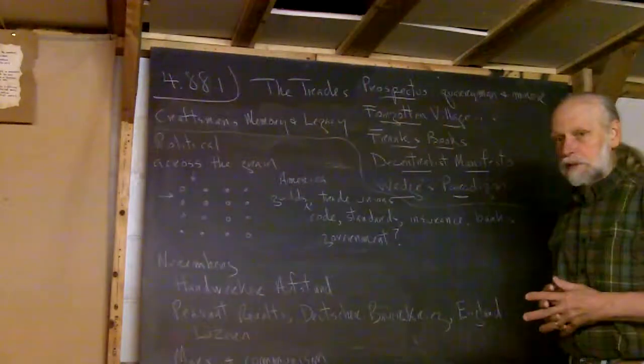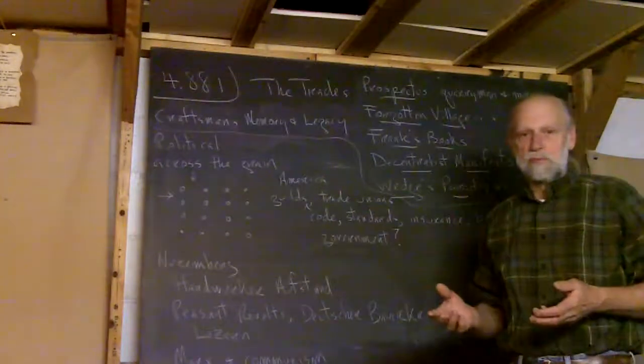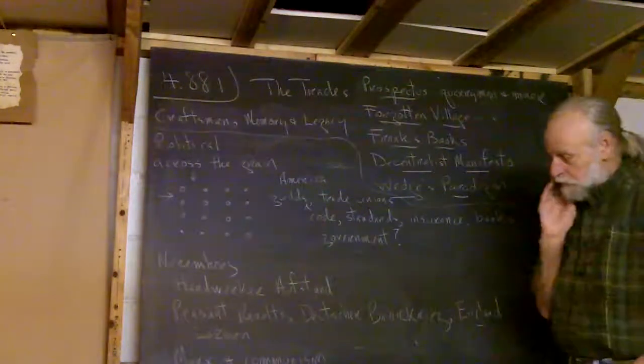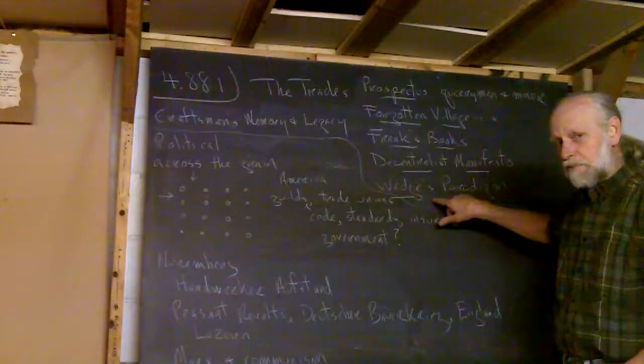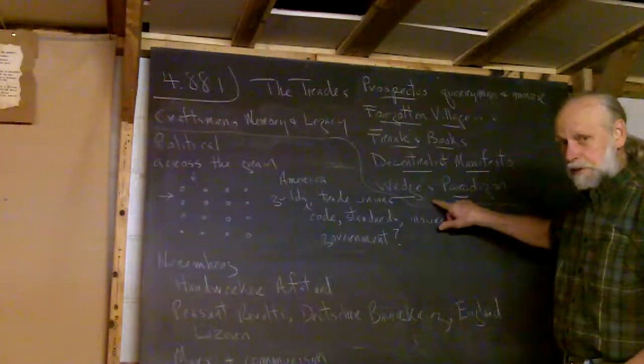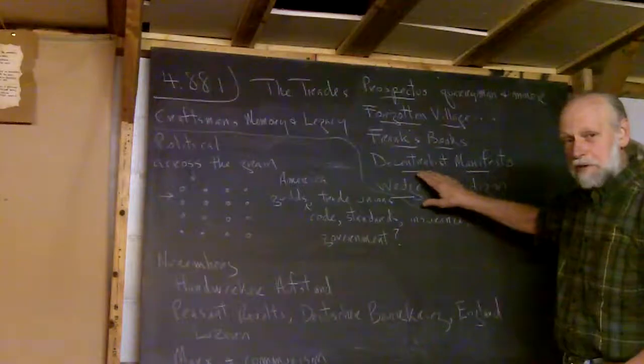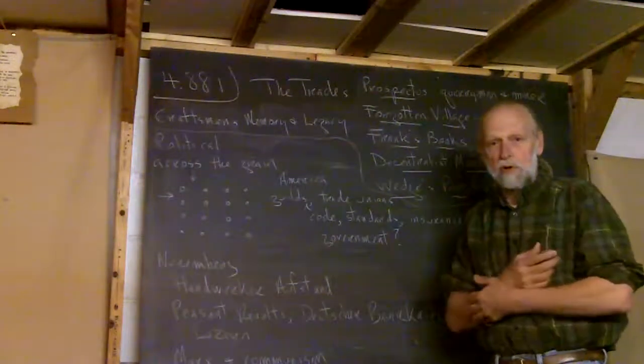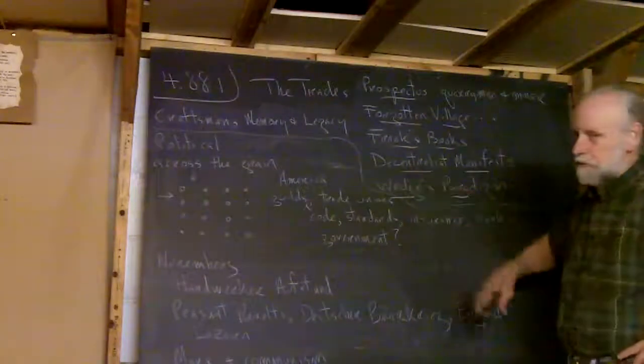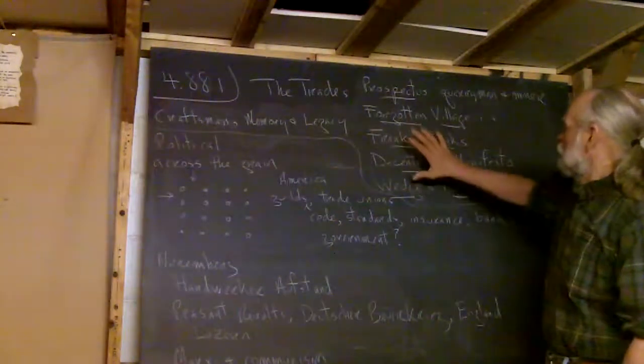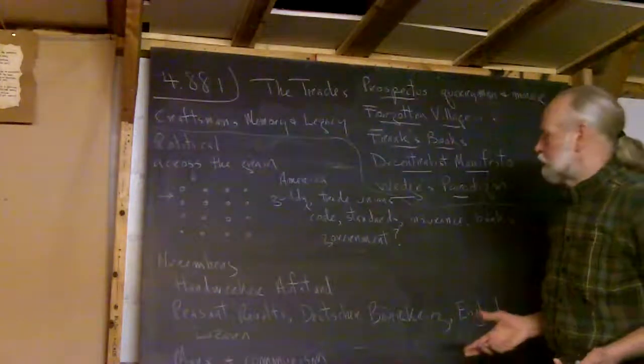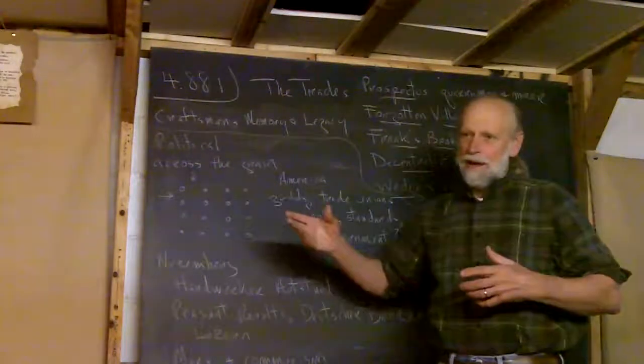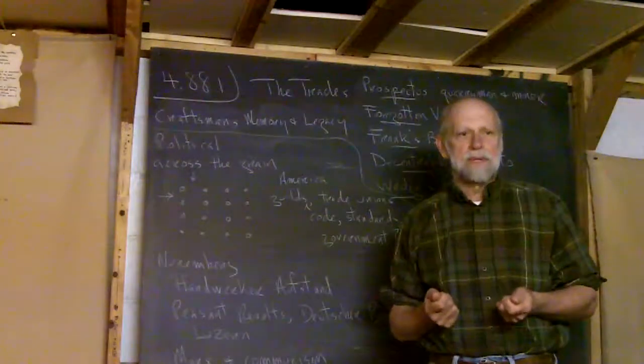Frank's books - I flipped through books about the trades, earlier I flipped through books that I have on various subjects that pertain. The Decentralist Manifesto - to get these in order, I did Wedge's Paradigm first and put it in context. But the Decentralist Manifesto was really part of that.